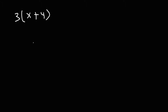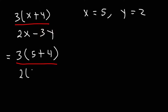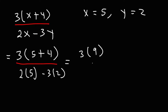Now let's say we have 3 times (x plus 4) divided by (2x minus 3y), where x is 5 and y is 2. Replacing x with 5: 3 times (5 plus 4) over (2 times 5 minus 3 times 2). Work inside the parentheses first: 5 plus 4 is 9. On the bottom: 2 times 5 is 10, minus 3 times 2 which is 6. Then 3 times 9 is 27, and 10 minus 6 is 4.